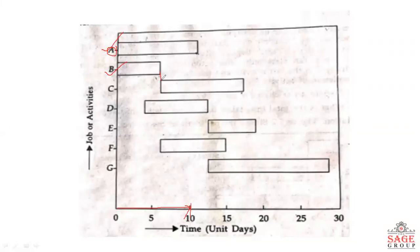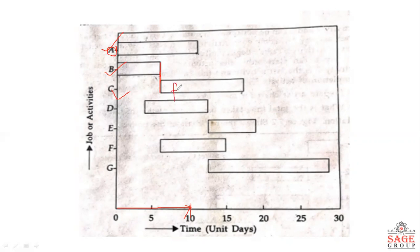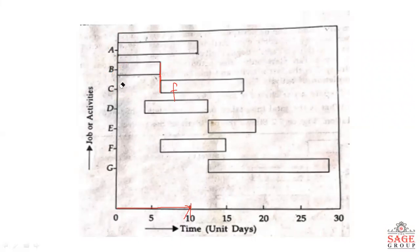After B work is completed, we have to complete C work. For example, if you have to construct a building on a site, first we do site preparation as activity A, then excavation as activity B. After the excavation is done, we can start the foundation work as activity C.